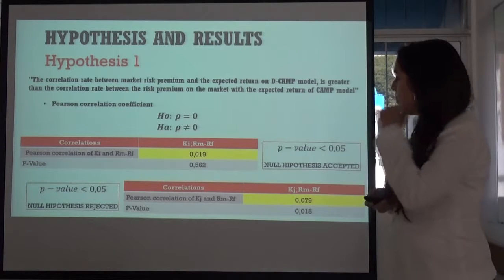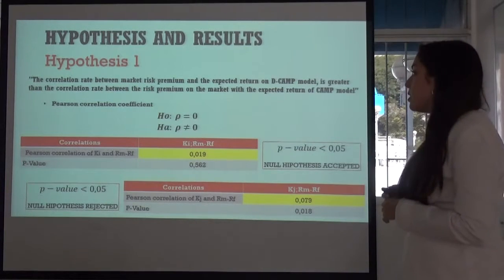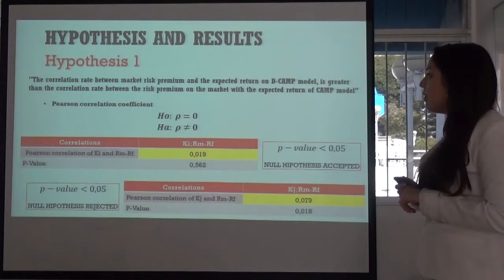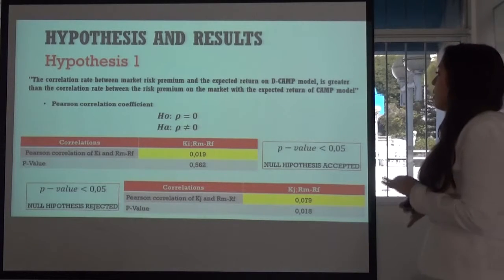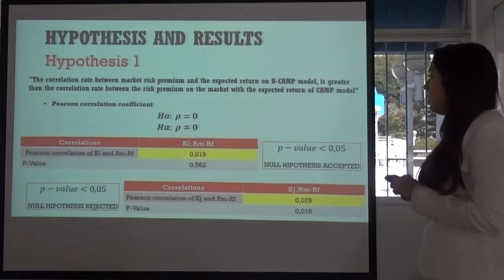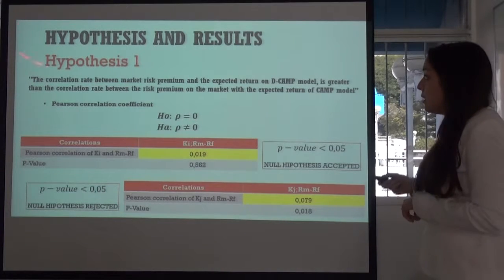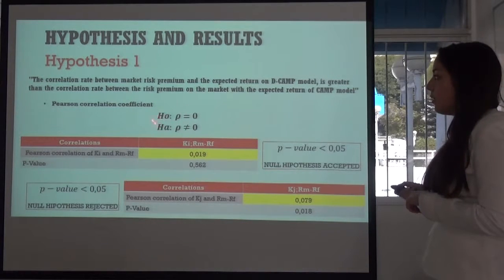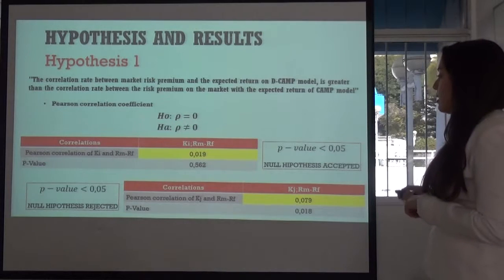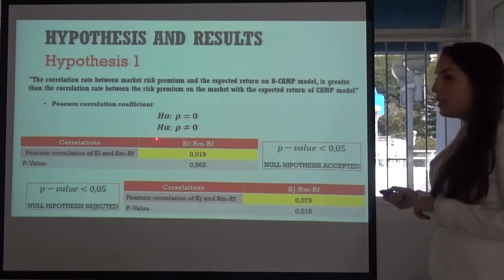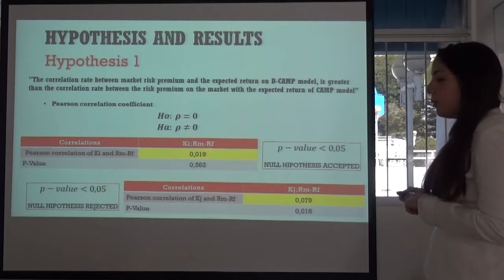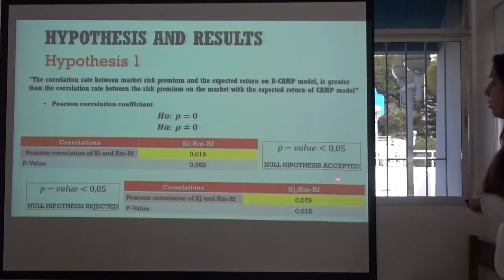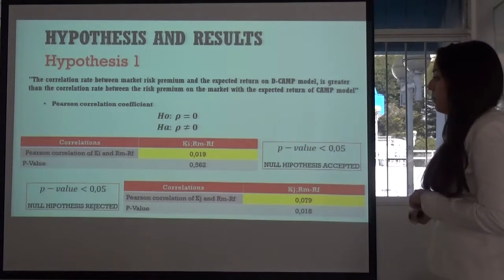Hypothesis and results. First hypothesis. The correlation rate between the market risk premium and the expected return of DCAPM model is greater than the correlation rate between the risk premium and the market risk premium. And with the p-value higher than the level of trust,